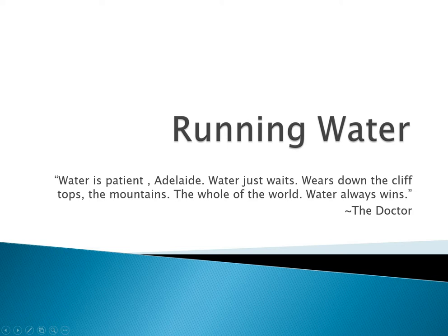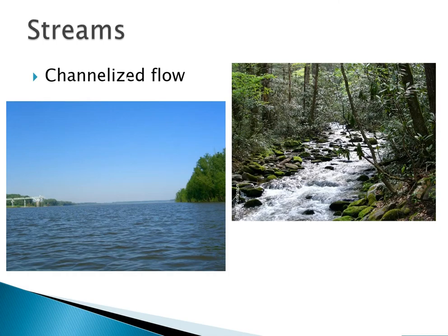In this set of videos we're going to be looking at running water, or rivers. A stream is simply channelized flow — water likes to channelize itself. It's going to find a low point and then run down as a stream of water. That channelized flow could include something large, like what you see on the left screen, or something smaller like a little mountain brook on the right. In all of these, the physics are exactly the same.